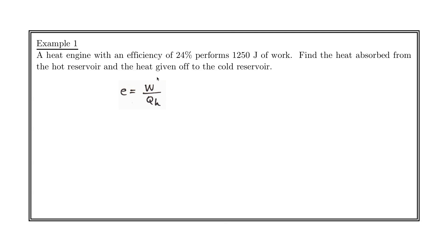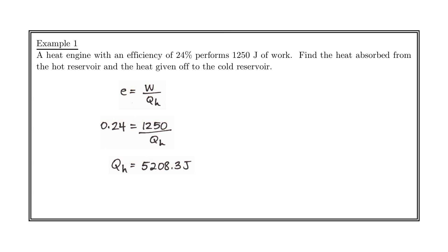Find the heat that's absorbed from the hot reservoir and the heat that's given off to the cold reservoir. We start with efficiency equals work over QH. We know how much work is done and we know the efficiency, so we plug our numbers in, rearrange, and solve. We find 5,208.3 joules of heat energy.